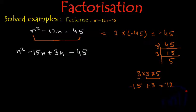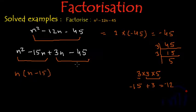And now if we pair these terms, from these two terms I can take n common and inside the bracket we will have n - 15. And similarly from next two terms if I take +3 common, again I will get n - 15 inside the bracket.